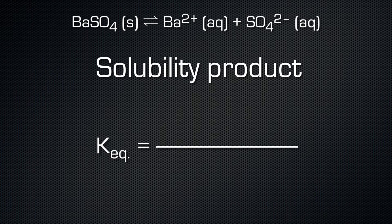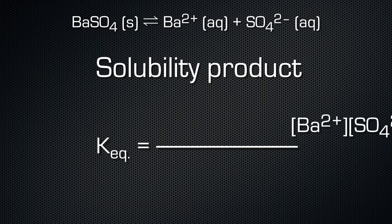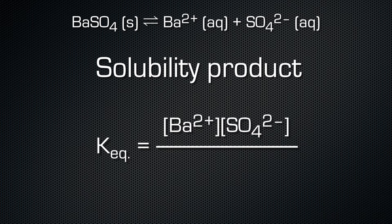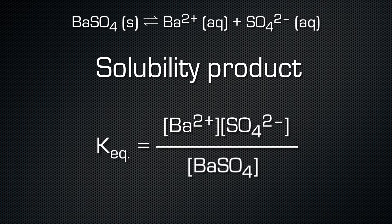The solubility product is nothing else than the equilibrium constant of the dissolution process. The products of the dissolution process are the two dissolved ions and they appear in the numerator. The solid barium sulfate is the starting material and it appears in the denominator. The activity of solids is equal to 1, therefore barium sulfate disappears from this equation.